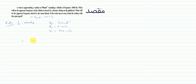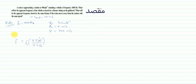Since the observer is stationary, we use the formula: f = f₀ × (v ± v₀) / (v ± vs). Since v₀ is zero, this simplifies. This is basically the Doppler's effect formula applicable to all situations.